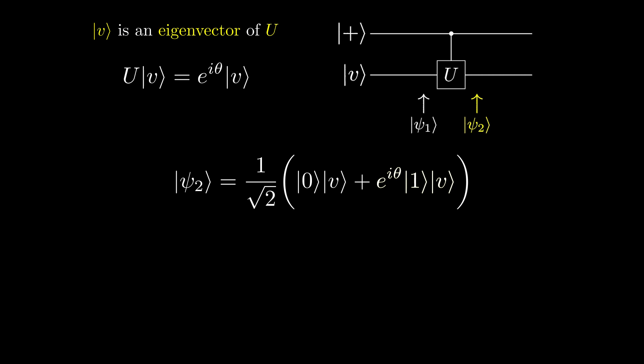We can now factor back out the v state from the equation. Can you see what has happened? V is unchanged even though it was the target qubit, and a factor of e to the i theta has been applied as a relative phase to the control qubit.